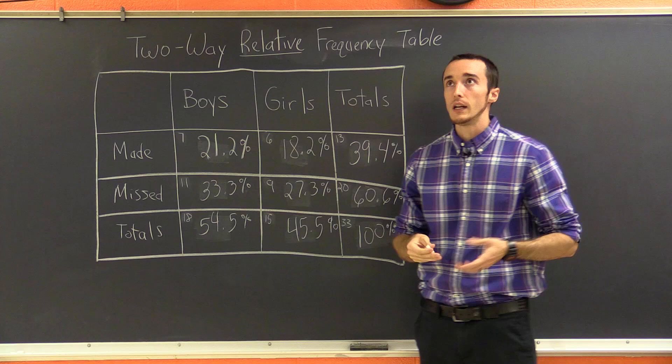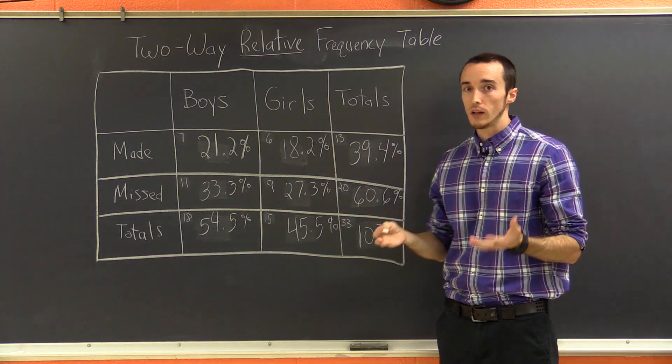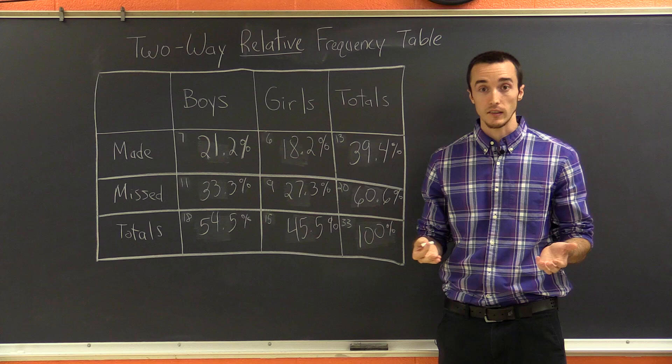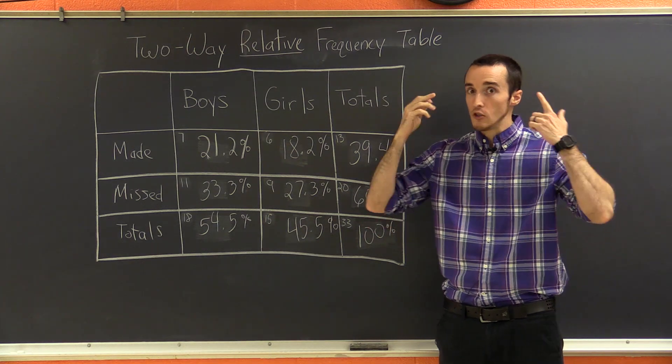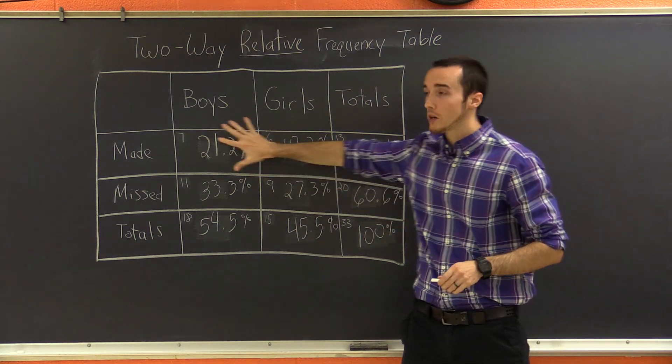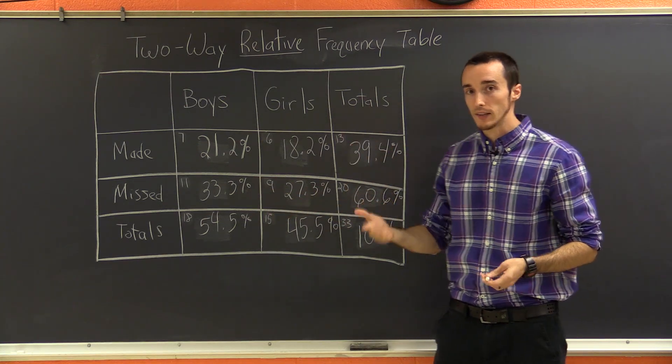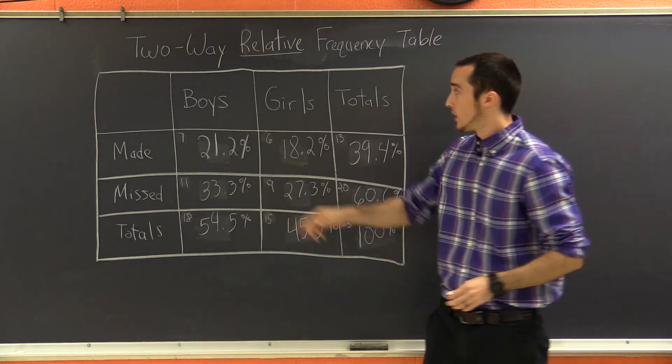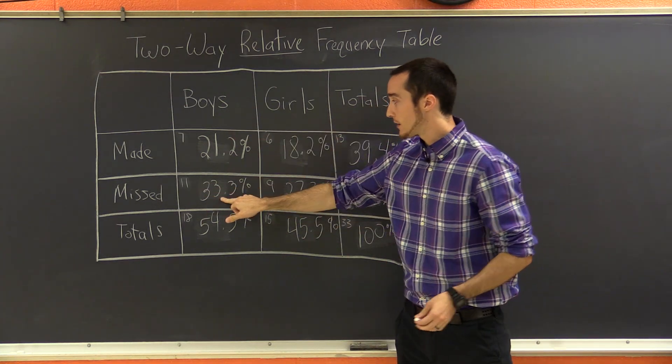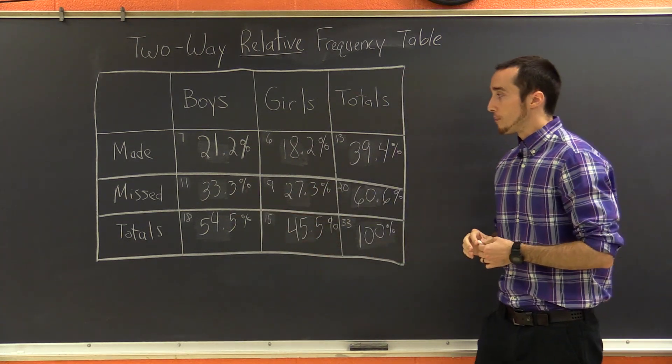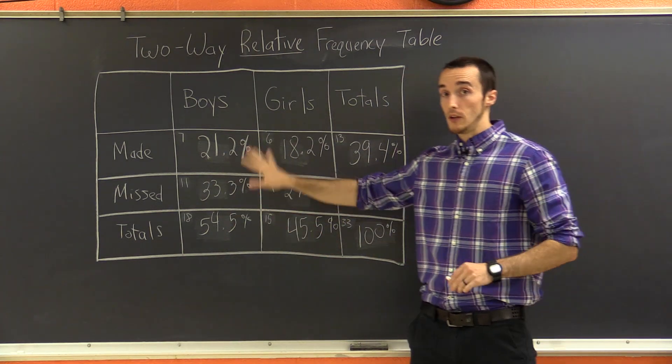So a question could be, what is the joint relative frequency of boys who missed a basket? As soon as they say joint relative frequency, I know it's one of the numbers on the inside of the table, and then just think about what they're asking. Boys who missed a basket? Well, boys who missed a basket, the answer is going to be 33.3%. So that's joint relative frequency. Those are numbers on the inside.